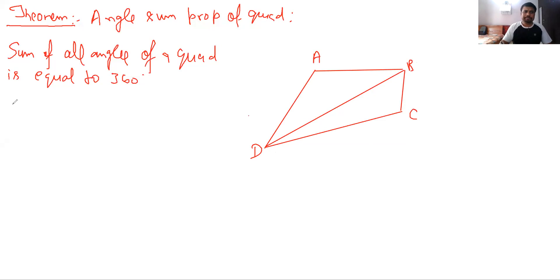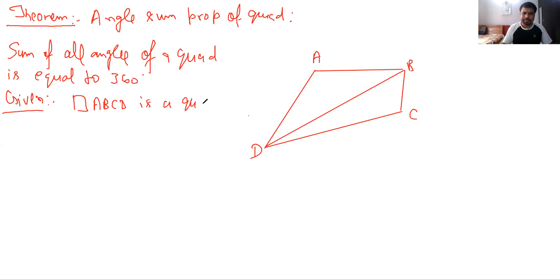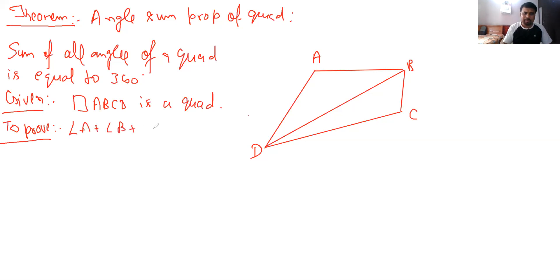Given: ABCD is a quadrilateral. To prove: Angle A plus Angle B plus Angle C plus Angle D equals 360 degrees.